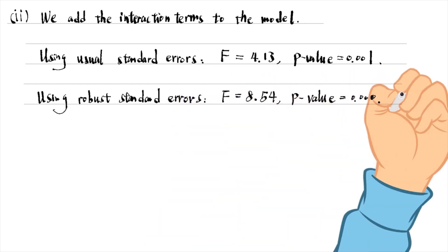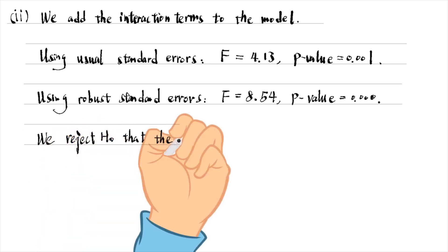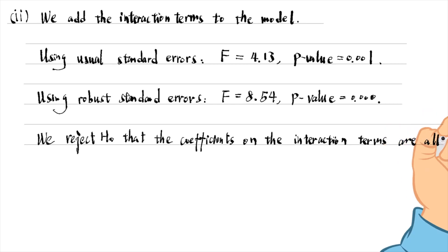And its p-value is 0 to 3 decimal places. We reject the null hypothesis that the coefficients on the interaction terms are all 0 in both cases at the 1% level.